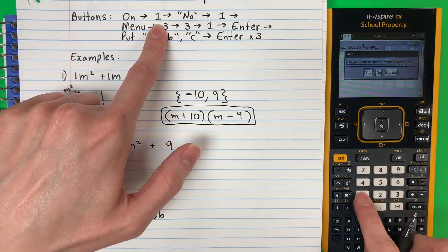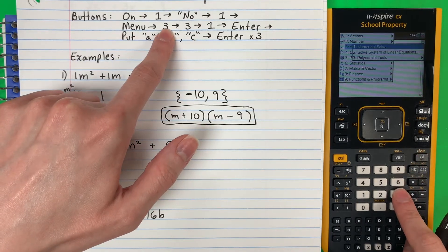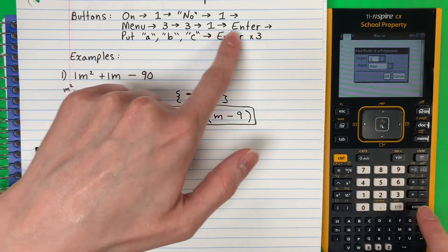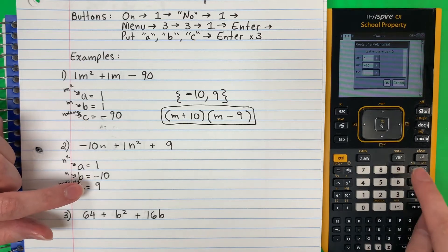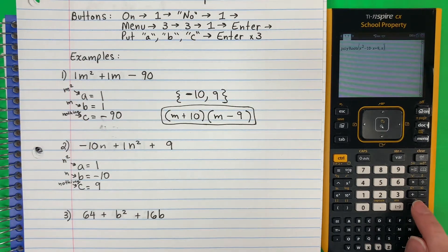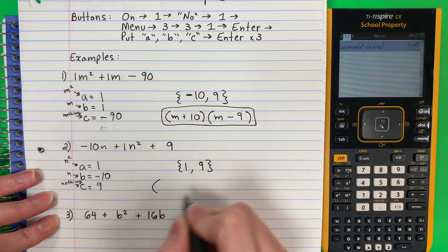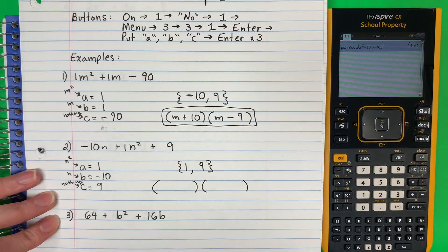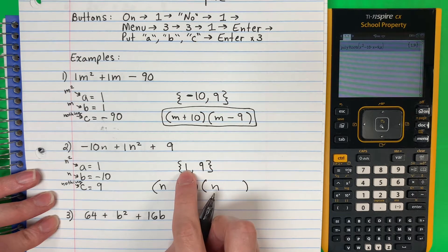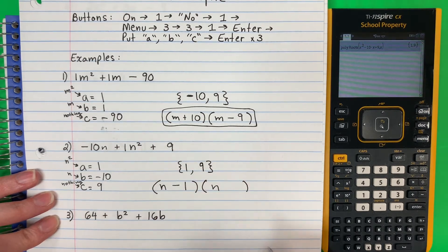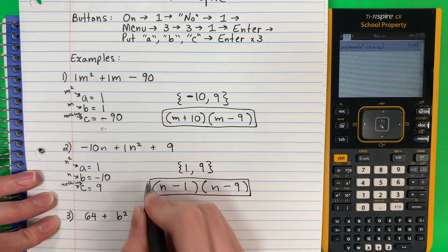Let's go ahead and do it again. Push On, 1, no, 1. Menu, 3, 3, 1, Enter. Put ABC: 1, down, negative 10, down, 9. Enter three times. I get 1 and 9. So I'm going to do my pair of parentheses — mis pares de paréntesis. What letter? N. And N. Opposite — this is positive 1, so I put negative 1. This is positive 9, I'm going to put negative 9. There it is. That's my answer — es mi respuesta.